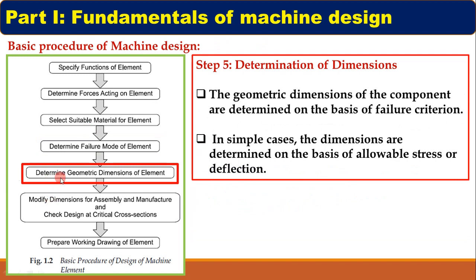Step 5 is: Determine geometric dimensions of the element. To find out the geometric dimensions, the failure criteria is taken into consideration. In simple cases, dimensions are determined on the basis of allowable stress or deflection. There is a relation between allowable stress and failure criteria, which will be studied in detail in Part 2 of this unit.